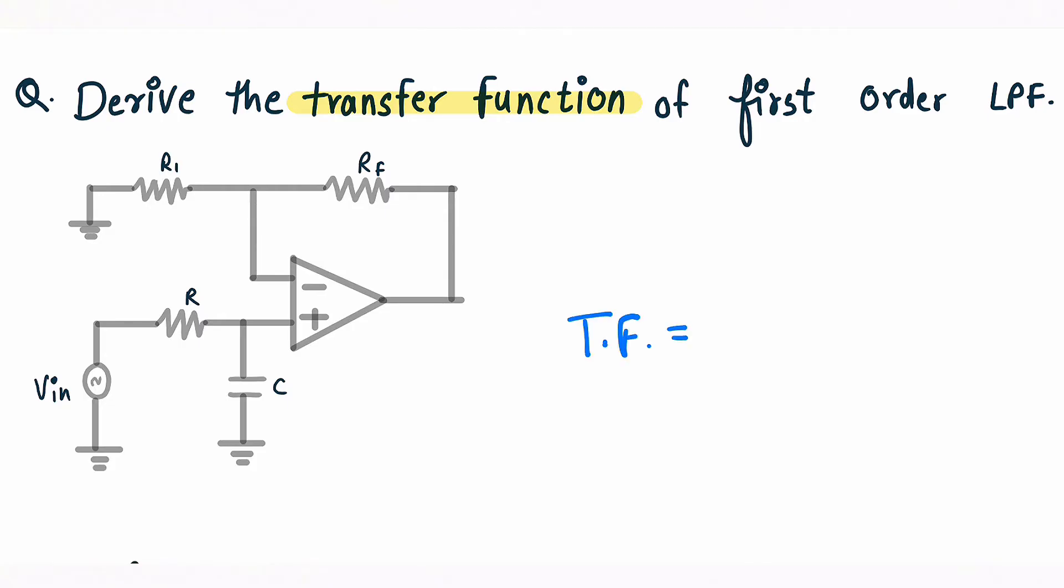In case of LPF we are taking output from this node and we are giving input to non-inverting terminal of op amp. To the non-inverting terminal not only input is connected but R and C network is also connected, so we need to find out what is the voltage at this node.